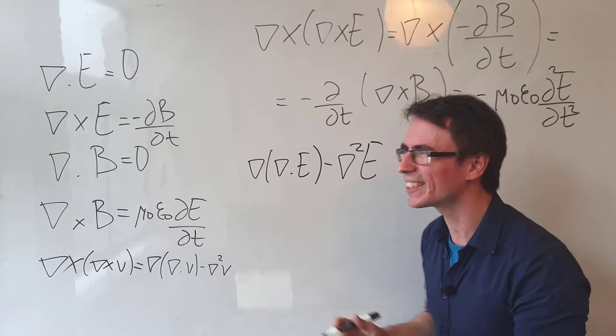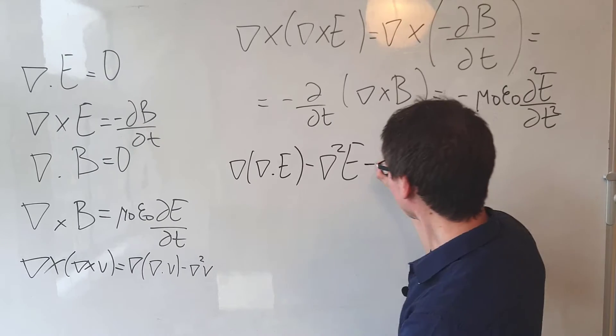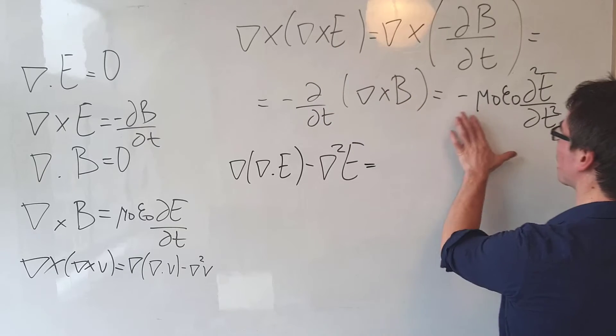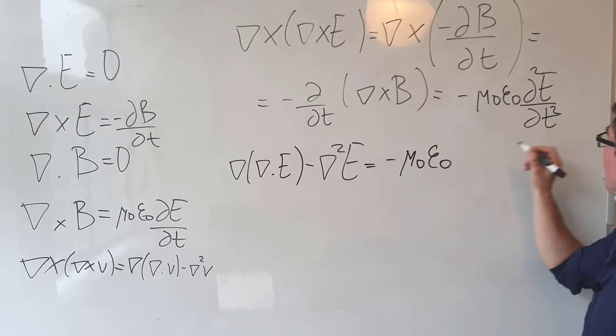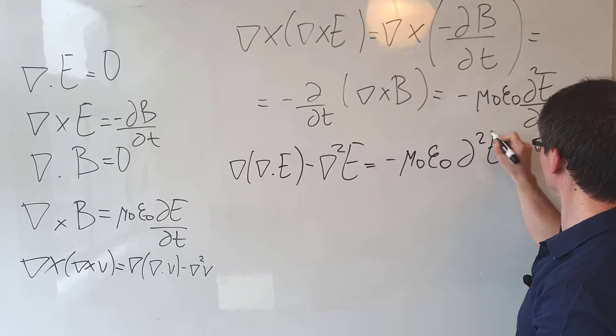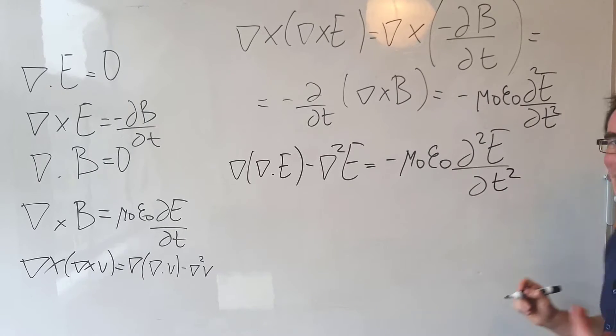And this will then be equal to the right hand side, which is given by minus μ₀ε₀ times the second time derivative of the electric field.